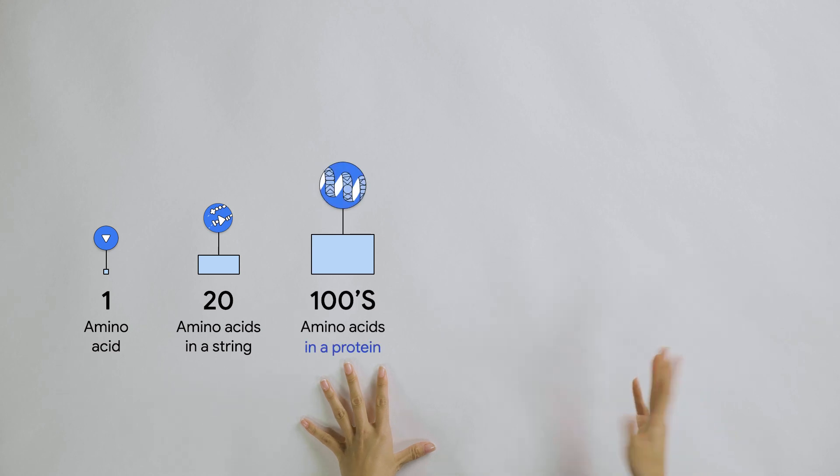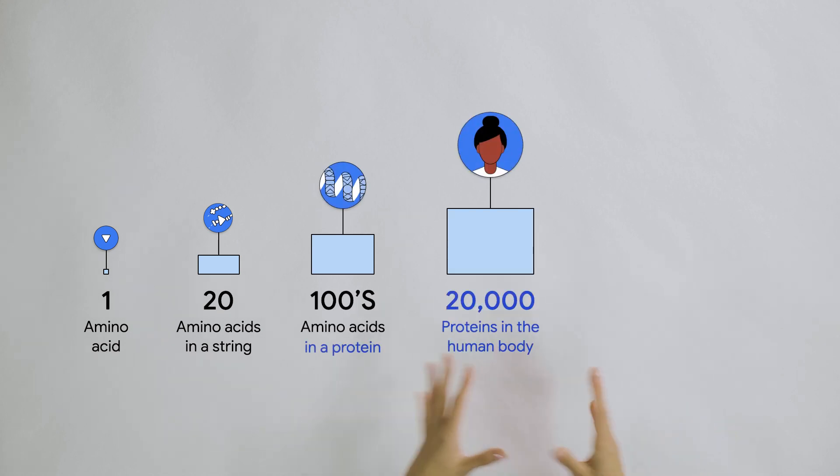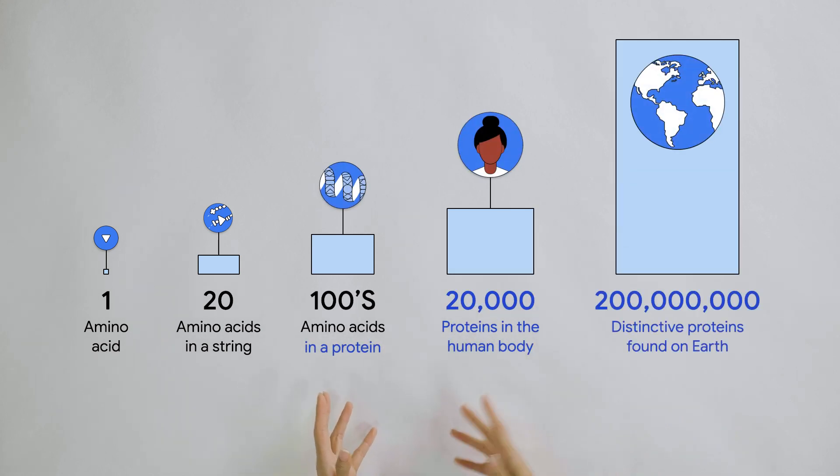Each one has a unique 3D shape that determines how it works and what it does. Because there are so many sequences and determining their 3D structure experimentally is so time consuming and expensive, scientists only know the exact structure of a tiny fraction of the proteins.